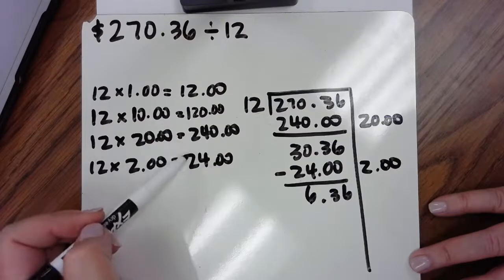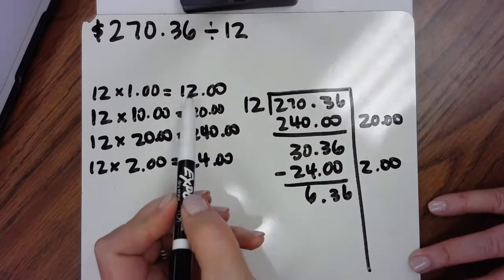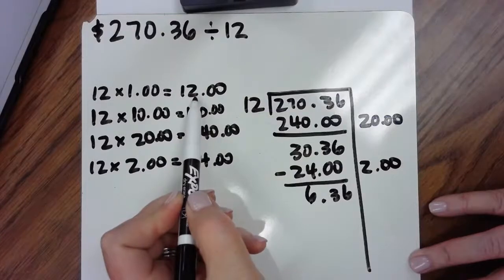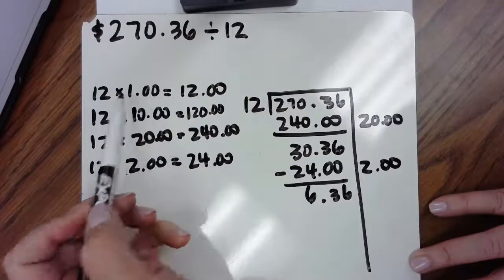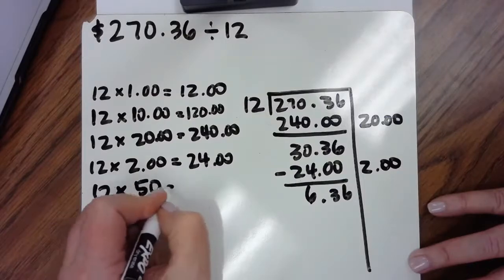And so I take a minute and I study this and I'm like, well, $6 is half of $12. So if I half the dollar and use $0.50, then that's going to get me $6 and that's pretty close.